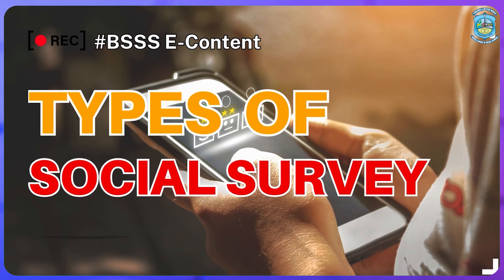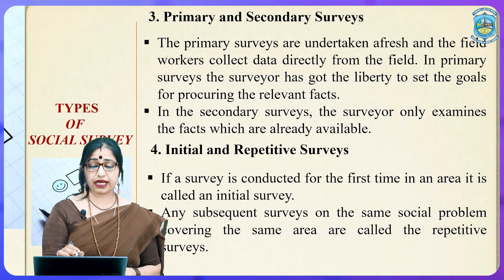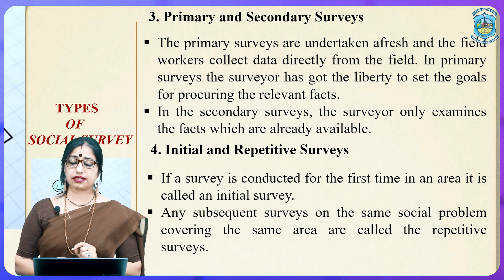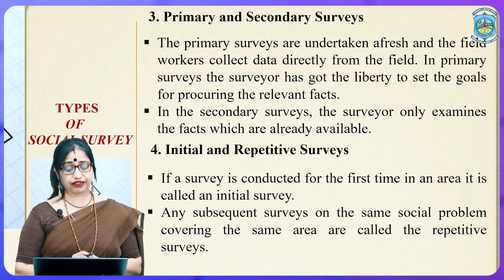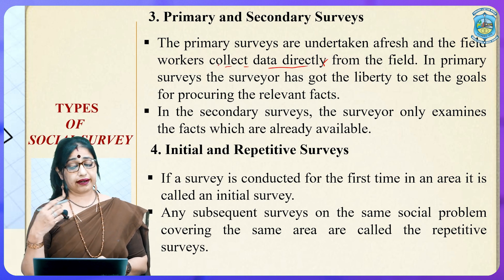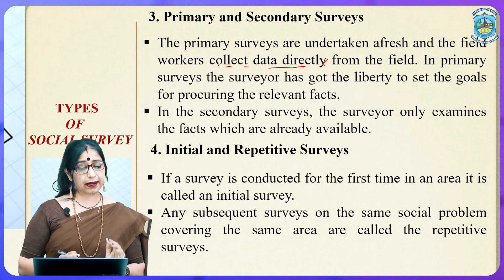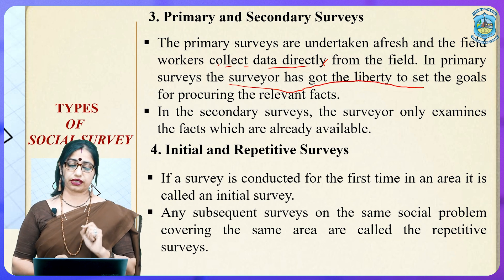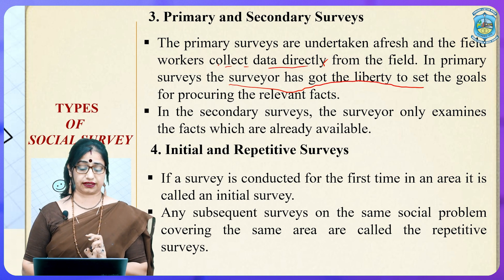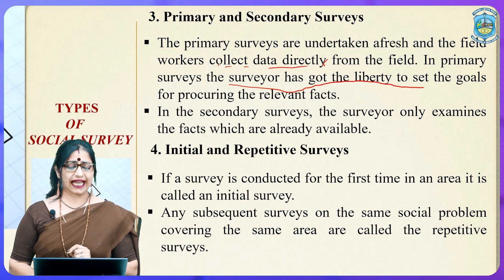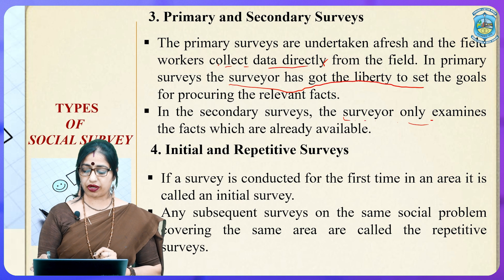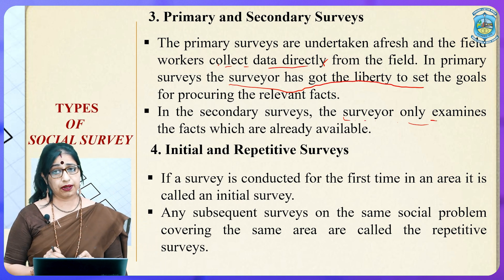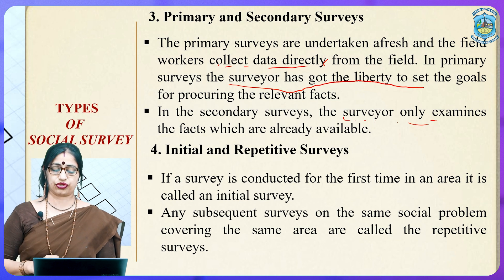The next type is primary and secondary surveys. Primary surveys are undertaken afresh and field workers collect data directly from the field. In a primary survey, the surveyor has the liberty to set the goals for procuring relevant facts and information. In secondary surveys, the surveyor only examines facts which are already available or have been researched by other researchers.